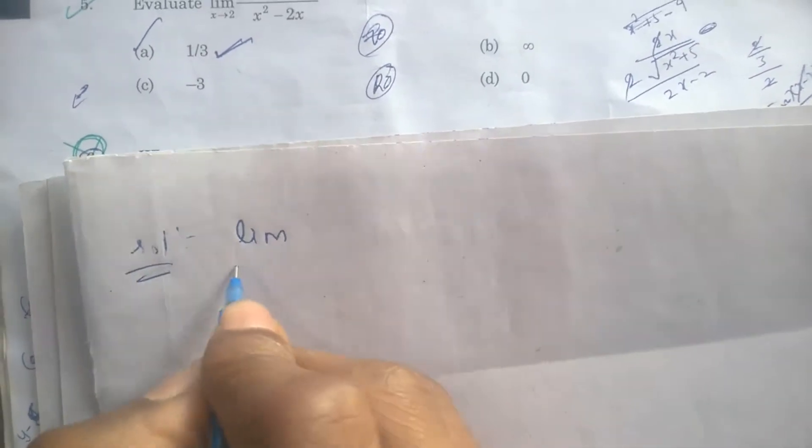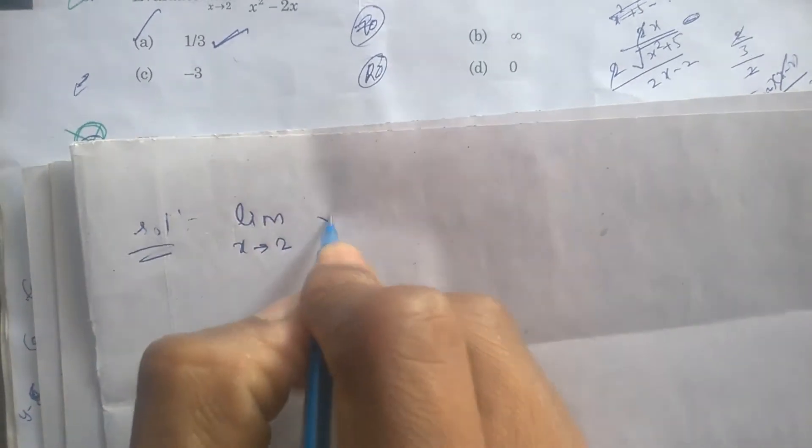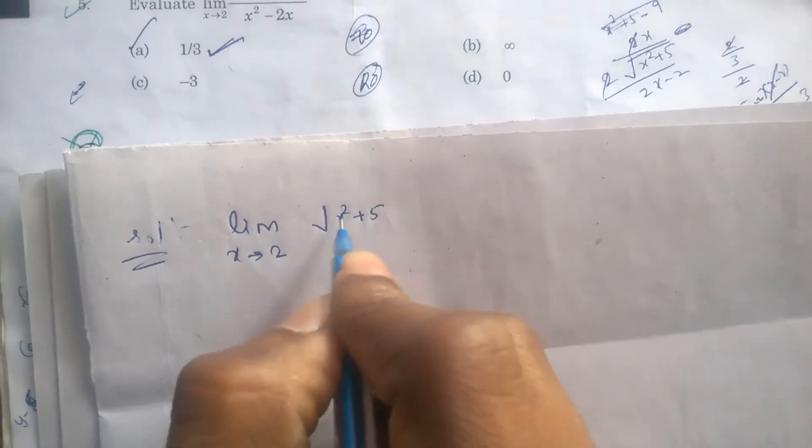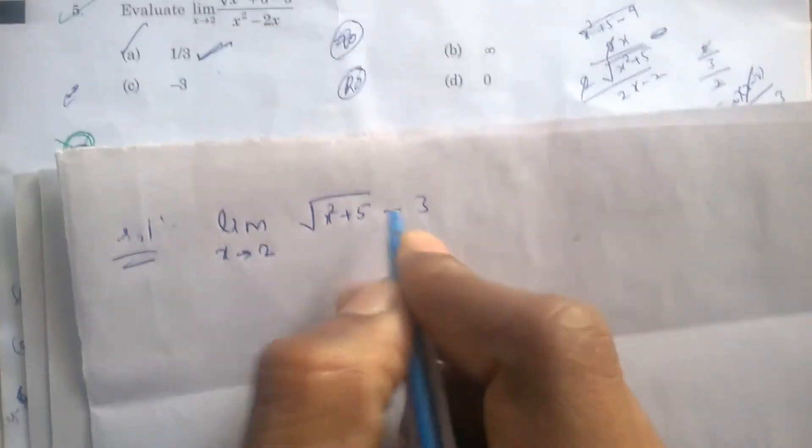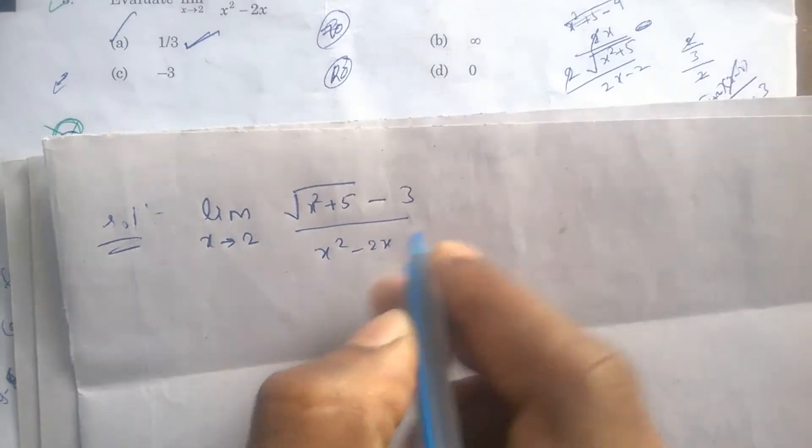The solution is: limit x tends to 2, √(x²+5) - 3 divided by x² - 2x.